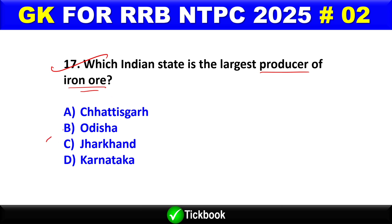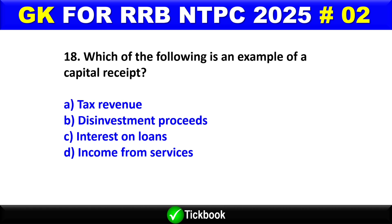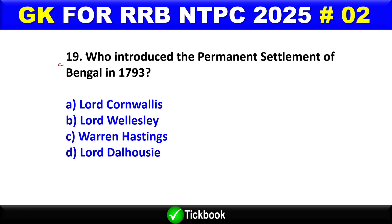Option B is the right answer — Odisha. Question number 18: Which of the following is an example of a capital receipt? Option B is the right answer — disinvestment proceeds.